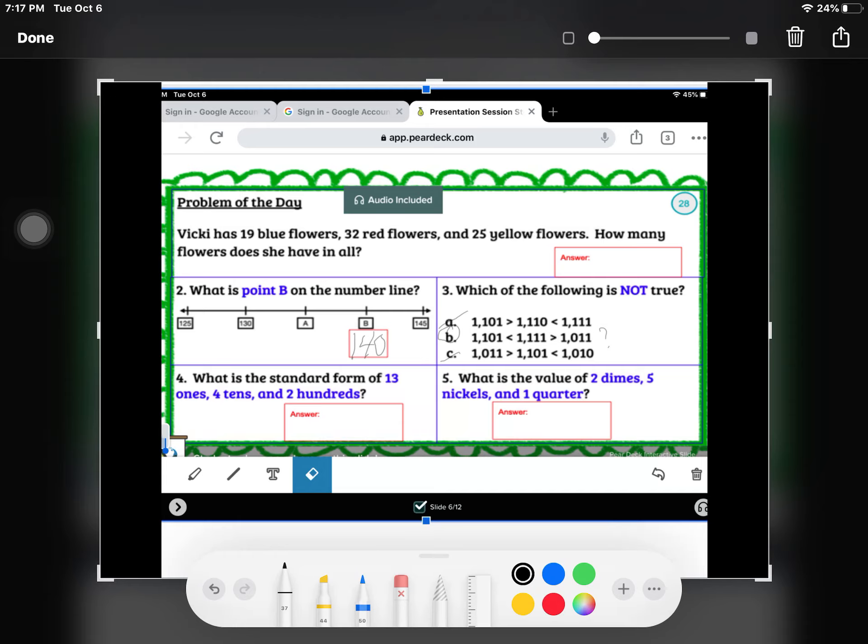Number four, what is the standard form of 13 ones, which is 13, four tens, which is 40, and two hundreds, which is 200? If we put those together and add them up, we get 253.